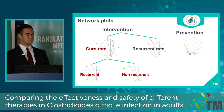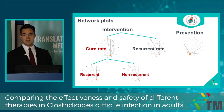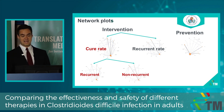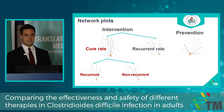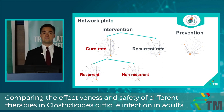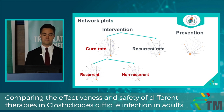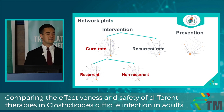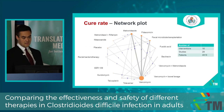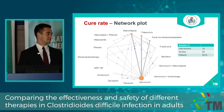In the recurrence rate, we check how many patients have recurrence after the end of treatment. And in the prevention group, we check how many patients could avoid recurrence. In this presentation, I will show the cure rate globally — including recurrent and non-recurrent cases — and as subgroups, the recurrent and non-recurrent cases separately. Now let me introduce our first network plot in the case of cure rate.